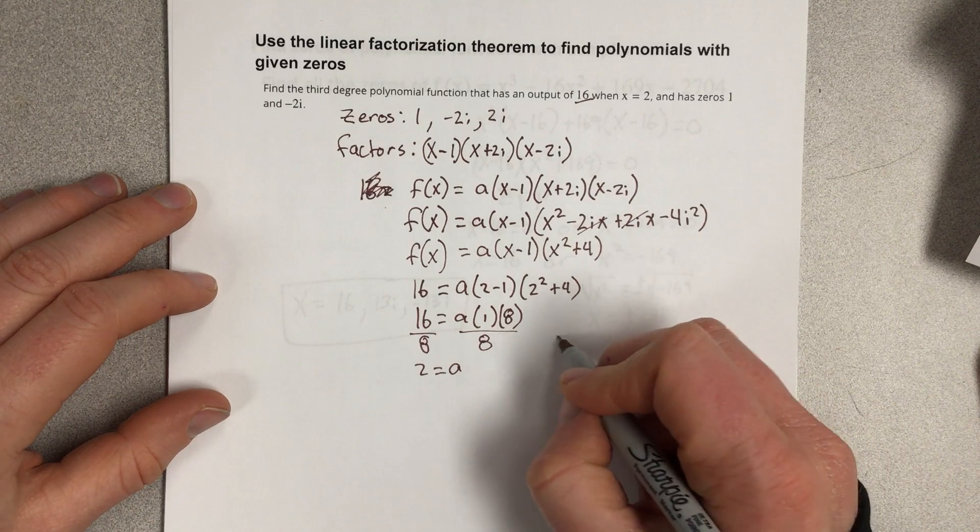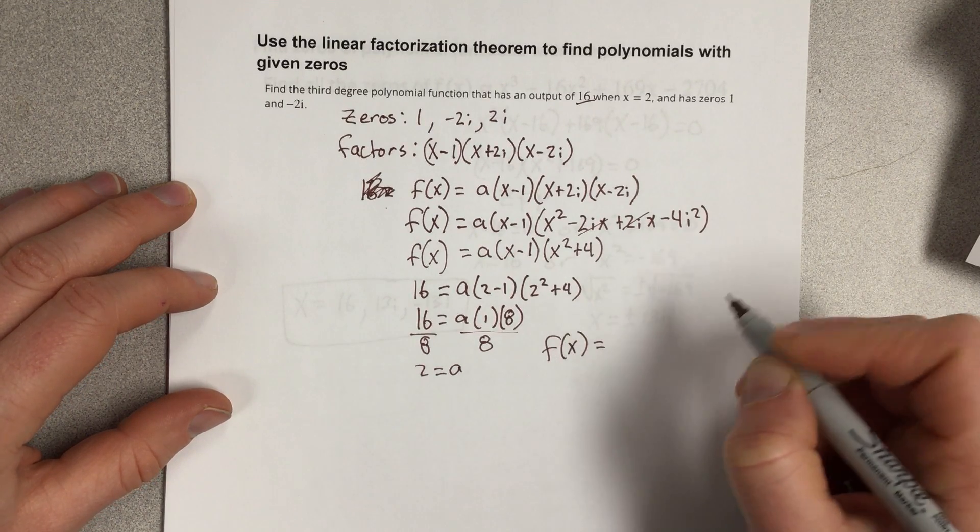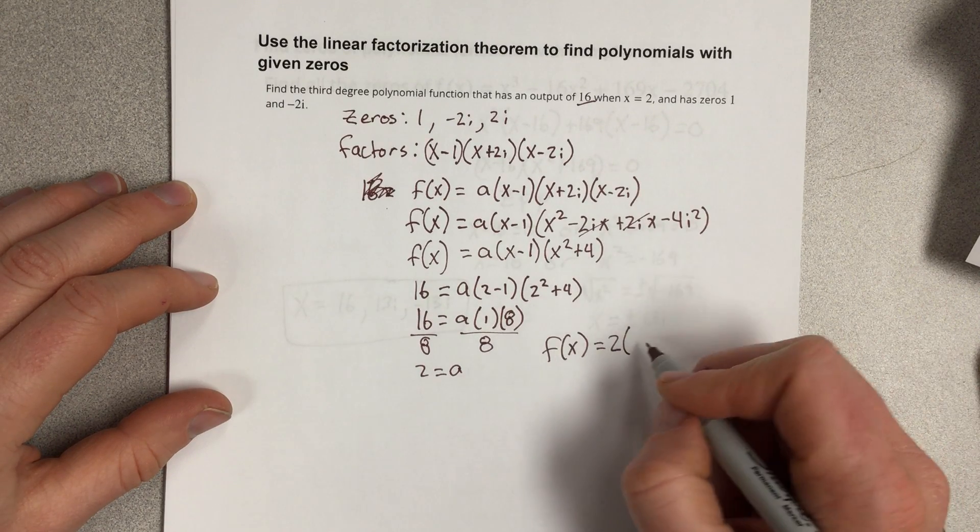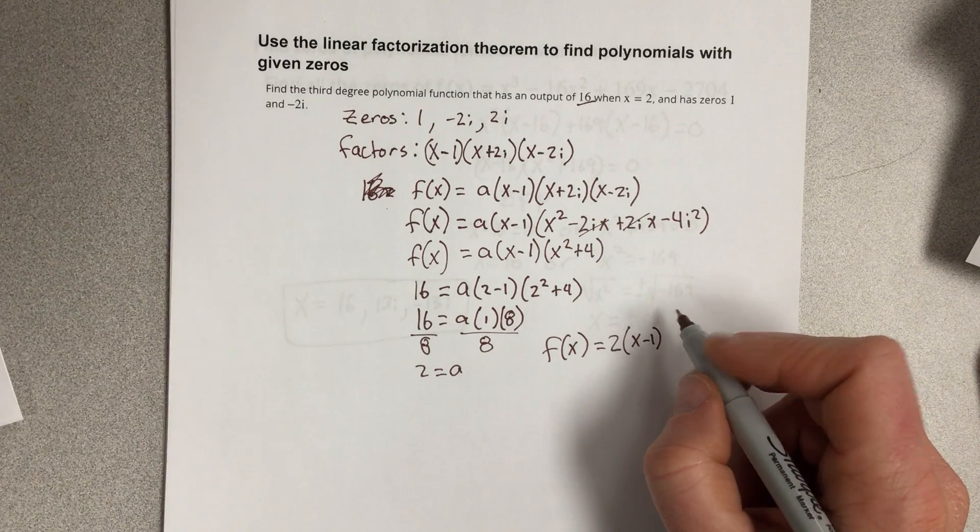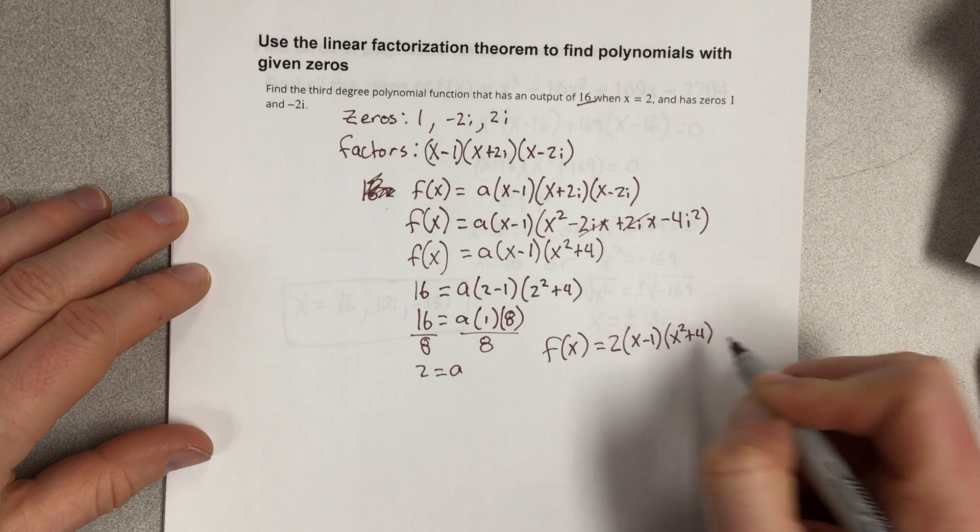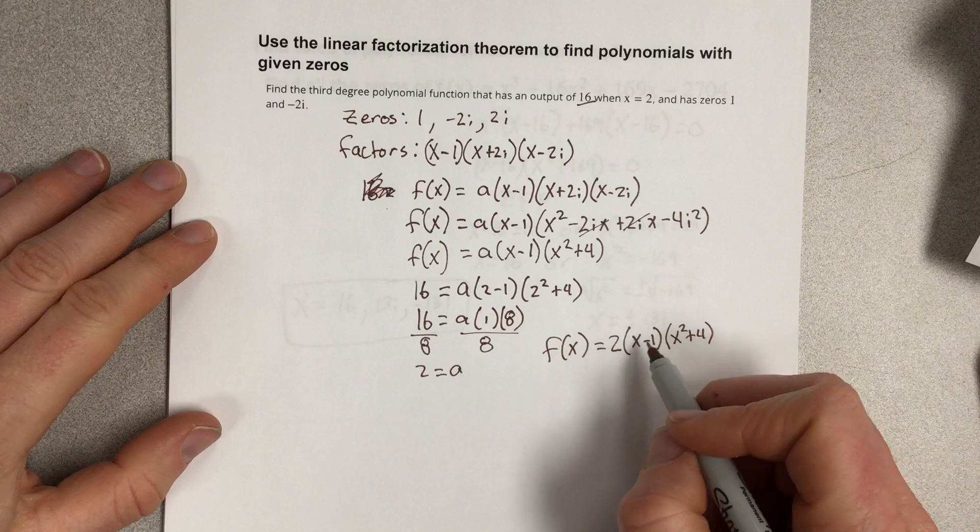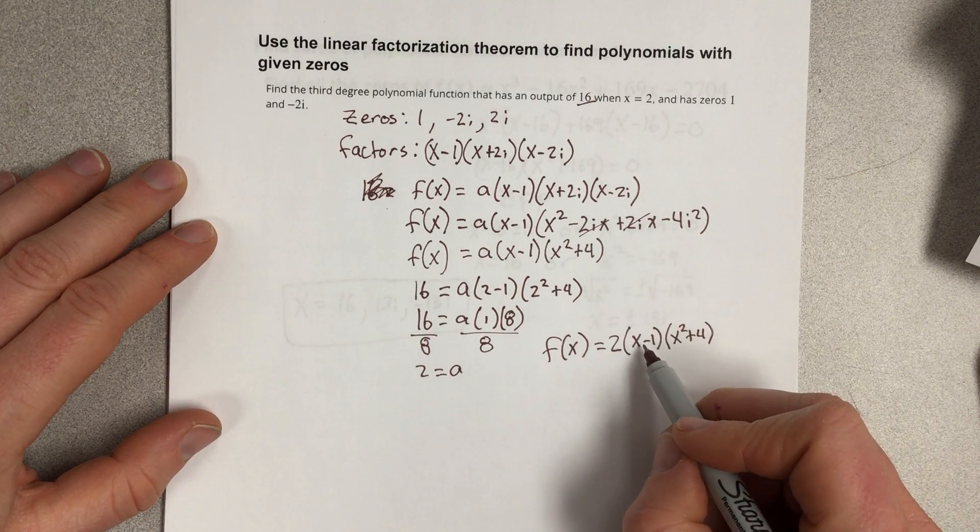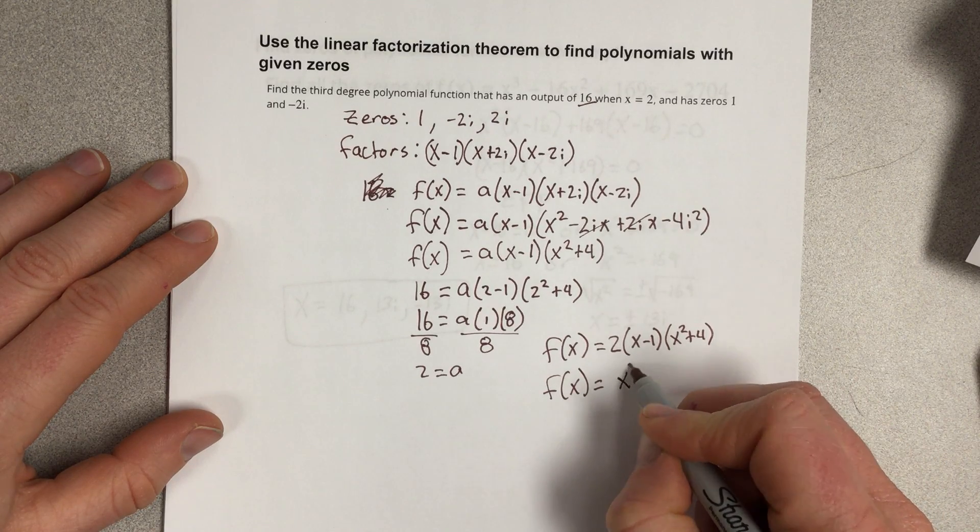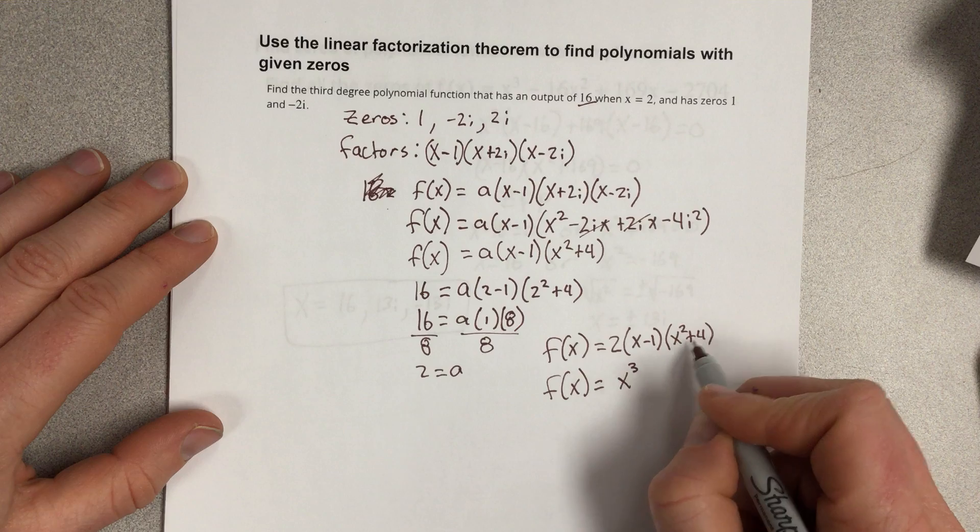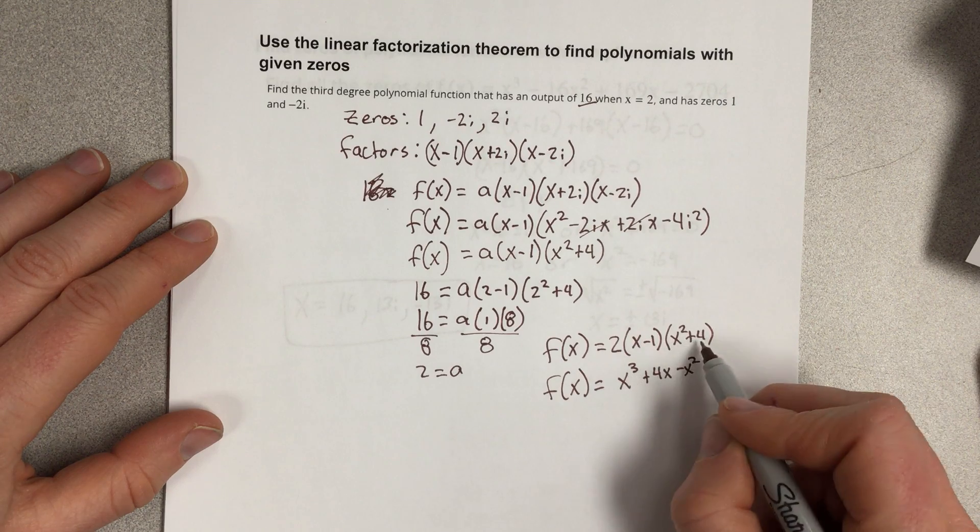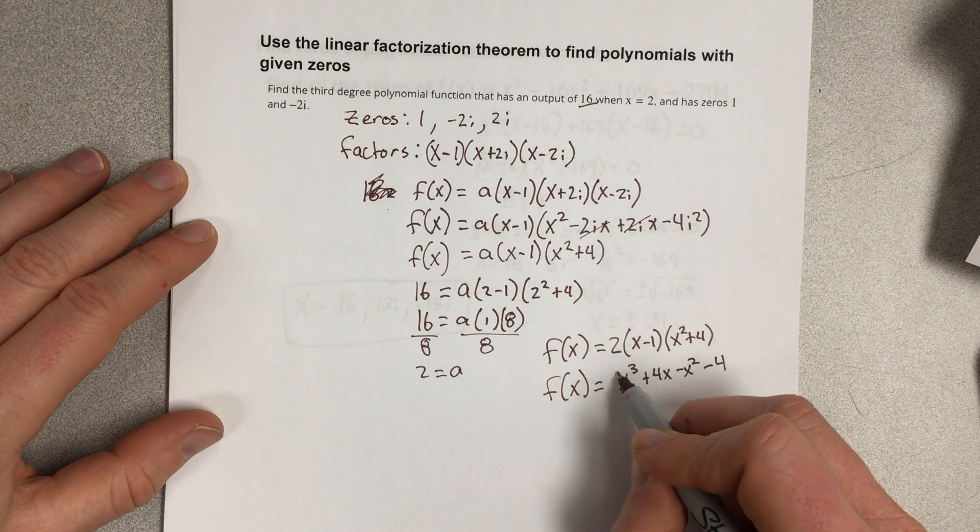So I can write that equation then as f of x is equal to 2 times x minus 1 times x squared plus 4. Now I should probably multiply all that out. And when I multiply that out, I end up with x cubed, so f of x equals x cubed plus 4x minus x squared minus 4, all times 2.